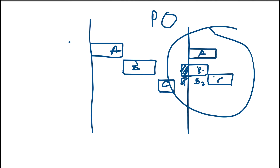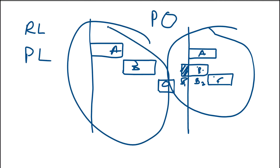If you ask yourself which one will have a longer duration on your project — retain logic or progress override — definitely retain logic, because it will still retain the original logic. Progress override will not retain that logic. But there'll be an issue, especially when you have the same resources working on activity A and activity B. It will show that you need the resource at the same time, so you might experience resource over-allocation when you plot your histogram.